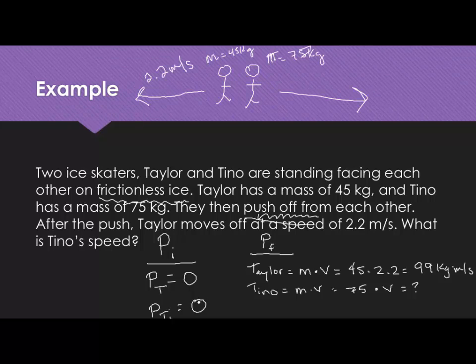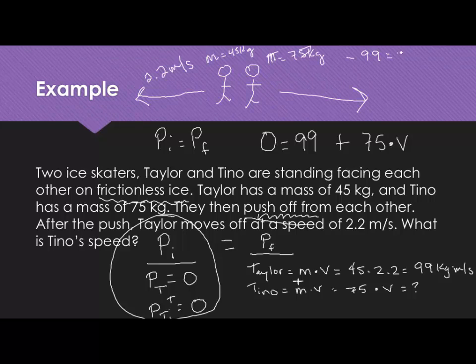But conservation of momentum tells us that whatever the momentum for the system is before, it needs to equal the final. So we can say initial momentum equals final. The initial momentum in this case is zero. And zero has to equal these two momentums: Taylor's, which is 99, plus Tino's, 75 times his velocity. So we can subtract 99 from both sides. We get negative 99 equals 75V. Then we divide 99 by 75 to get a velocity for him of negative 1.32 meters per second. The negative tells us they pushed off from one another in opposite directions.